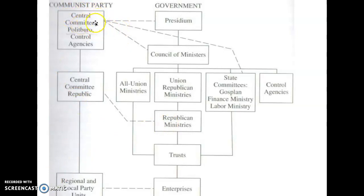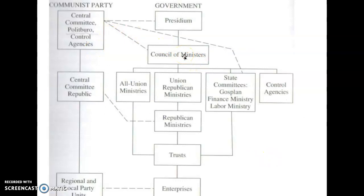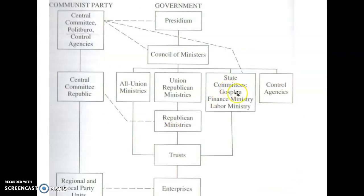The Central Committee and Politburo make decisions about how the economy is going to be run and send that information to the Council of Ministers. The Council of Ministers is responsible for executing the directives that the Central Committee and Politburo put forth, and then directs Gosplan to put that plan into place. Gosplan received the plans from the Council of Ministers or sometimes directly from the Politburo. The Gosplan was the part of the government that would actually turn an idea into a real-world outcome.